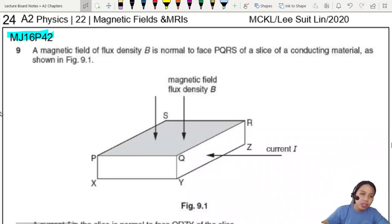Let's start off with this example, MJ16P42, looking at the Hall probe. We're going to learn about semiconductors. If you haven't watched the video yet, go check out the video on semiconductors P-type and N-type. That will help you a lot.